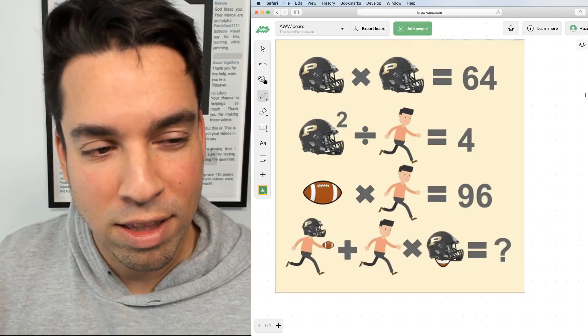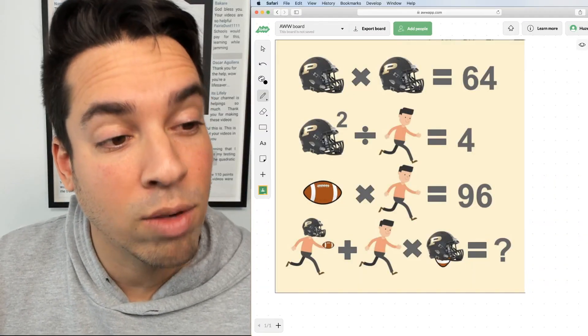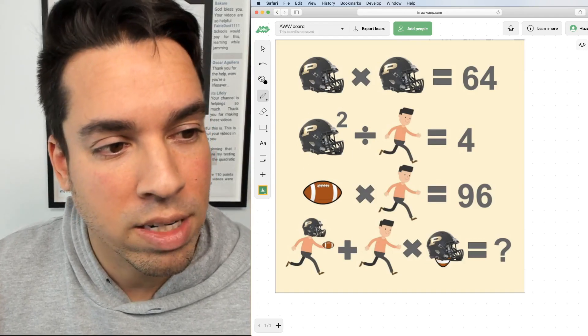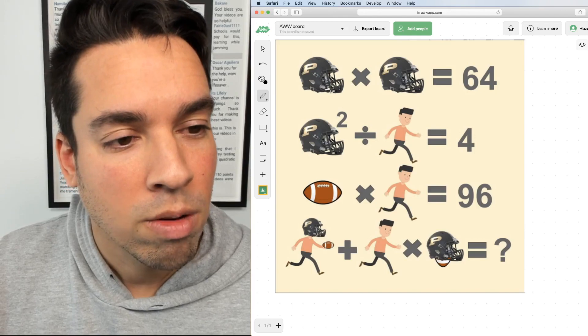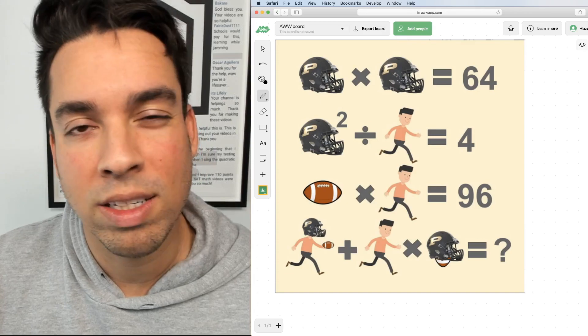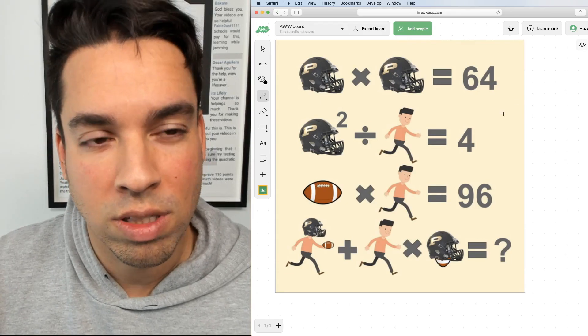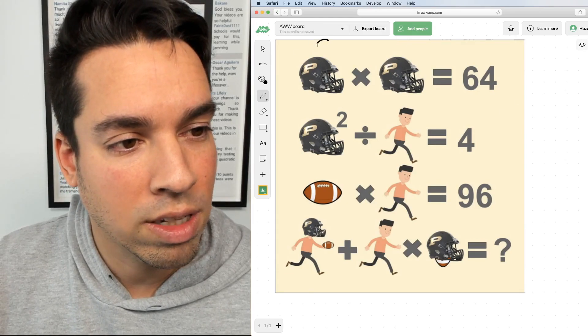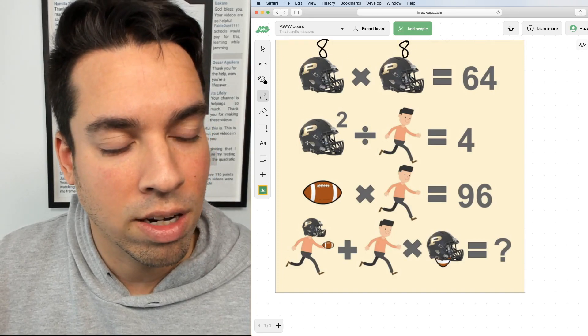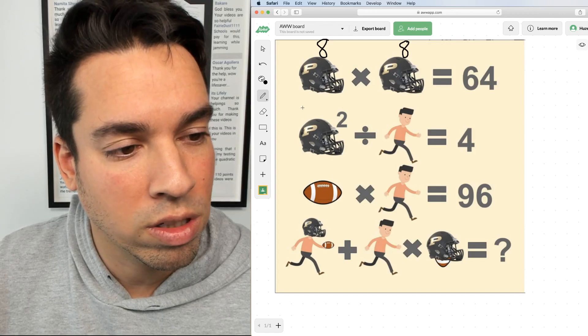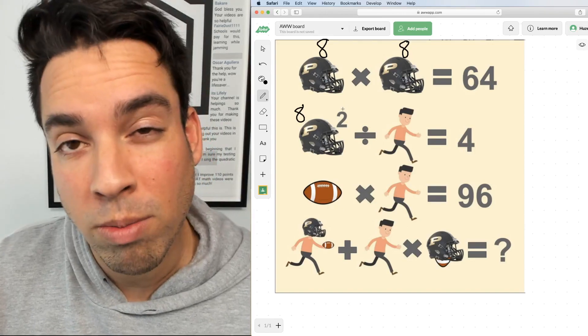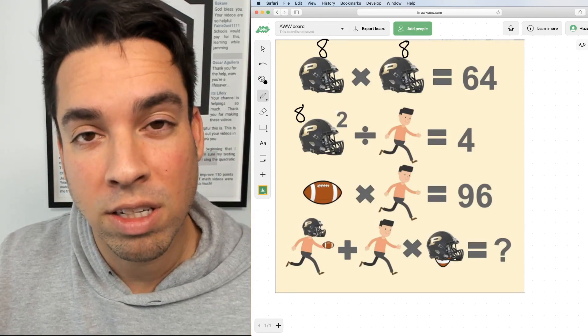All right, let's take a look at this puzzle. The first thing we notice is we want to go linearly or vertically, start at the top and make our way down. First I see these two helmets multiplied against each other equals 64. That means we're trying to find a number when times by itself gives you 64, and that of course is 8. So this is 8 and this is 8. I see a helmet down here as well that's also going to have a value of 8. We'll come to these later because they're a bit more complicated, but just remember every helmet is going to be the same value, it's going to be 8.